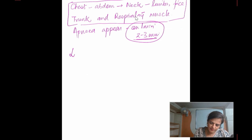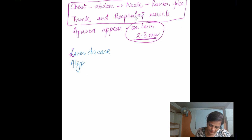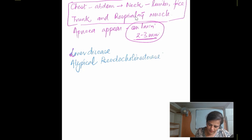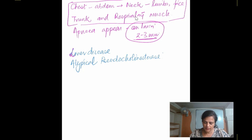Prolonged apnea occurs if the person has liver disease, which impairs metabolism. Or if the person has atypical pseudocholinesterase — a genetic variation. In some individuals, instead of normal pseudocholinesterase, they have atypical pseudocholinesterase. Because of this, succinylcholine is not metabolized fast; it remains in the body for a longer time, leading to prolonged apnea.